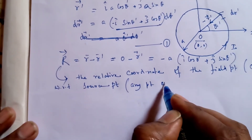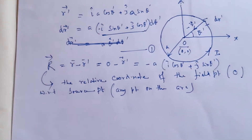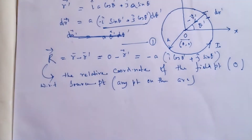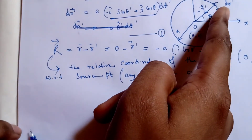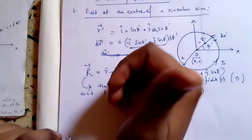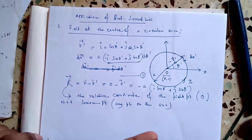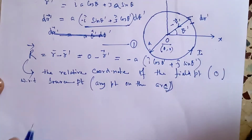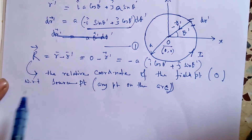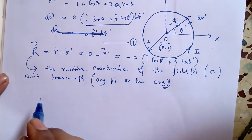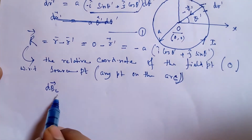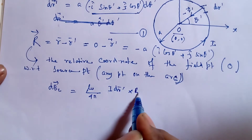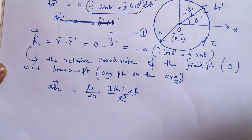We want to find the magnetic field due to this elementary length at O using Biot-Savart law. With the current going in this direction, the magnetic field will be directed vertically upwards — just use the right-hand rule. The field at the center O due to this elementary length dr' is dB = (μ₀/4π)·I·(dr' × R)/R³.